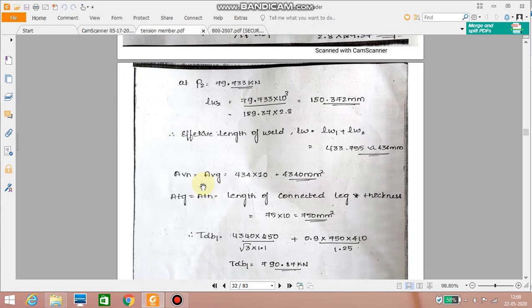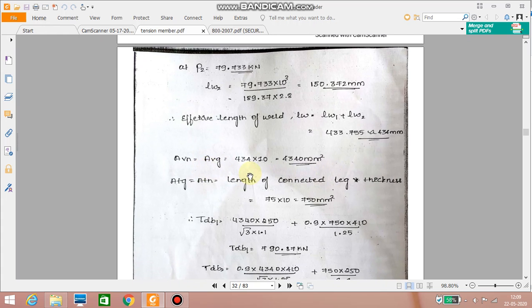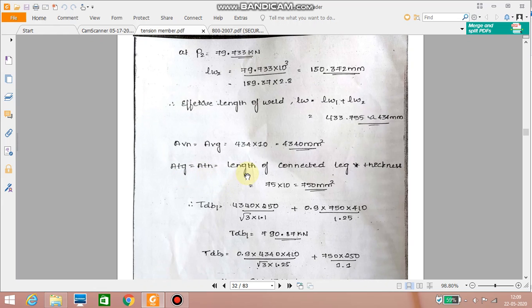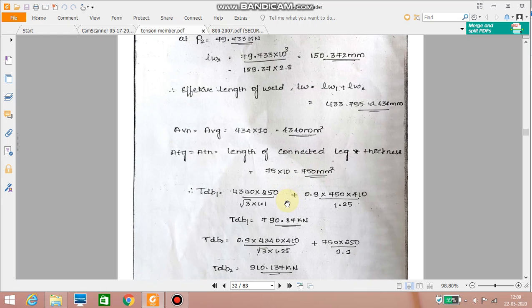So the value of AVN and AVG, it is a welded connection so nothing to deduct. 434 into 10, 10 is the thickness. So 4340 millimeter square is the value of AVN and AVG. Now ATG and ATN is depending on length of the connected leg into the thickness. It is 75 into 10. It is again 750 mm square.